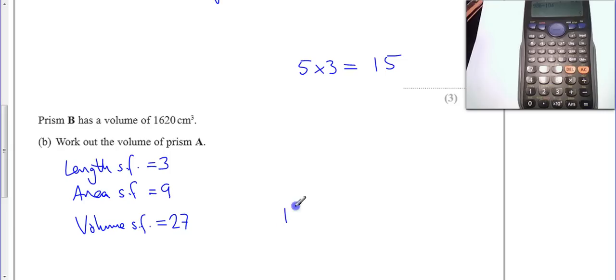So all I've got to do is 1620 divided by 27, it's got to get 27 times smaller. 1620 divided by 27 tells me the volume of A has got to be 60.